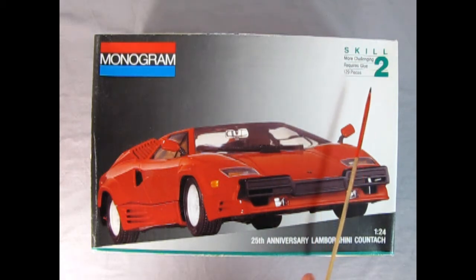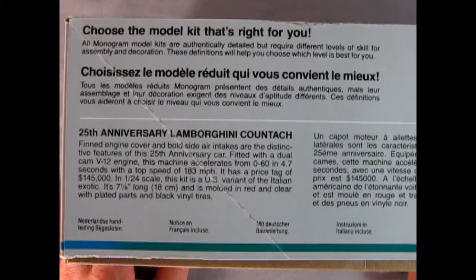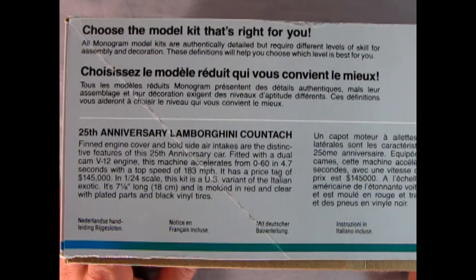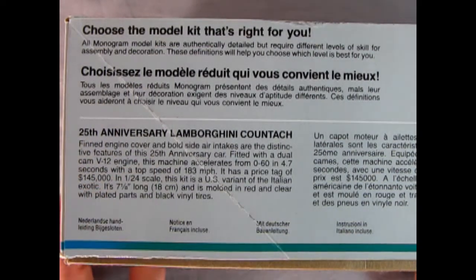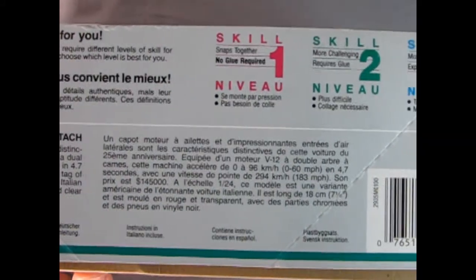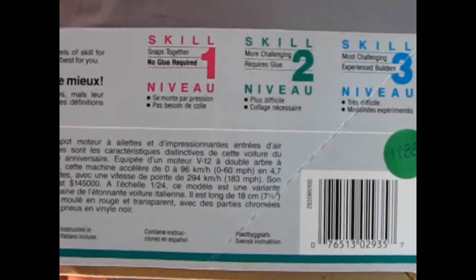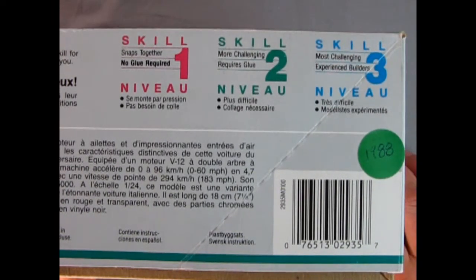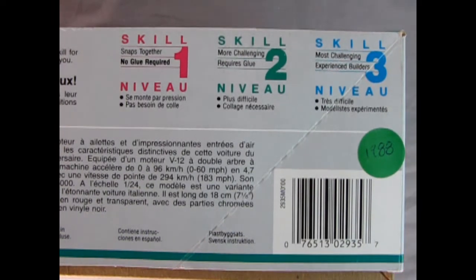This model kit is a skill level 2, requires glue, and has 129 pieces inside the box. On this side of the box we get a little bit of history of our 25th anniversary Lamborghini Countach. If we move the box across, it shows skill levels 1, 2, and 3. This is a skill level 2 kit.